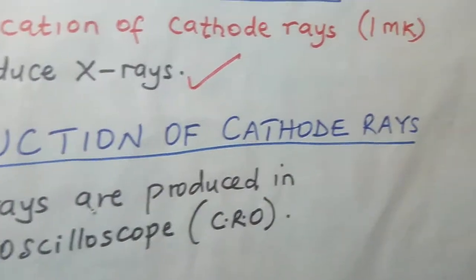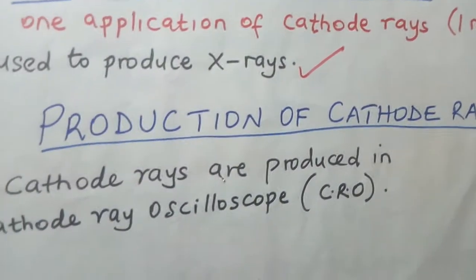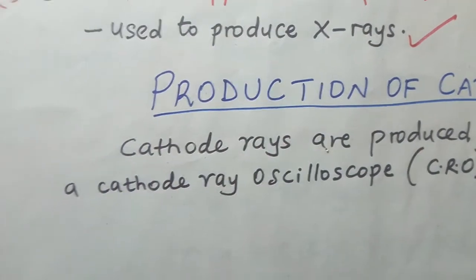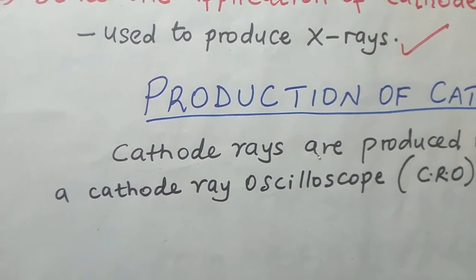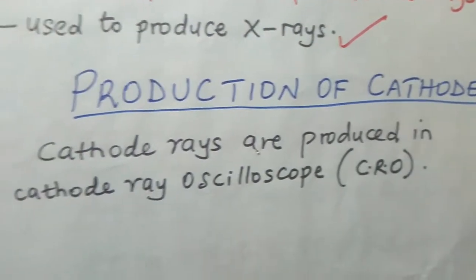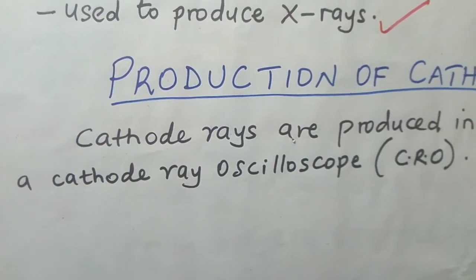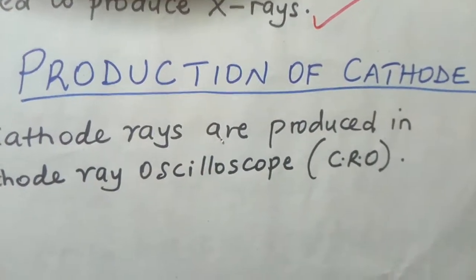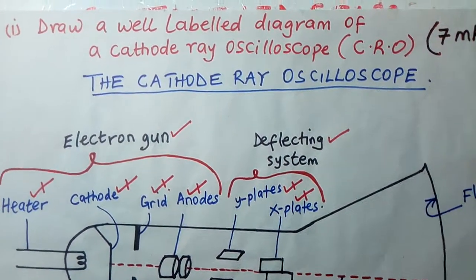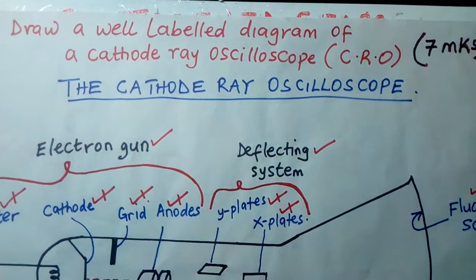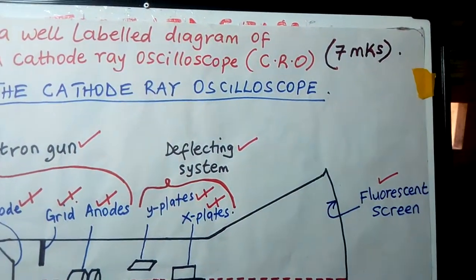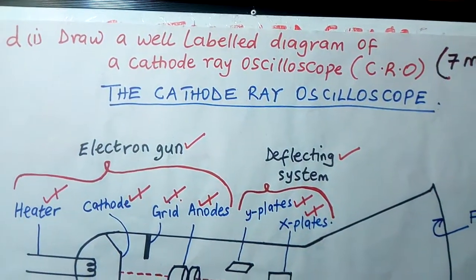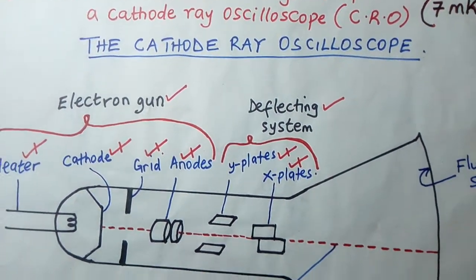Production of cathode rays: cathode rays are produced in an instrument called a cathode ray oscilloscope. Cathode rays are produced in a cathode ray oscilloscope — the abbreviation is CRO. So the examiner says draw a well-labeled diagram of a cathode ray oscilloscope, and he has given seven marks.